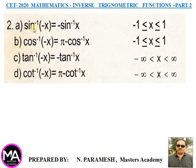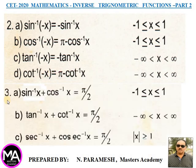Second point: sin⁻¹(−x) = −sin⁻¹x; cos⁻¹(−x) = π − cos⁻¹x; tan⁻¹(−x) = −tan⁻¹x; cot⁻¹(−x) = π − cot⁻¹x. Third point: sin⁻¹x + cos⁻¹x = π/2; tan⁻¹x + cot⁻¹x = π/2; sec⁻¹x + cosec⁻¹x = π/2.